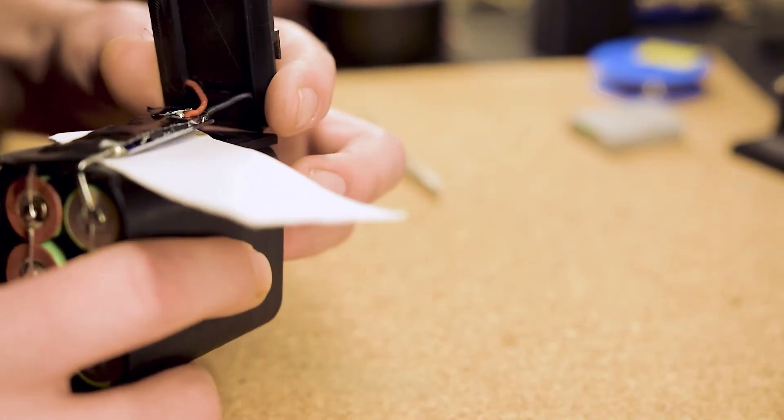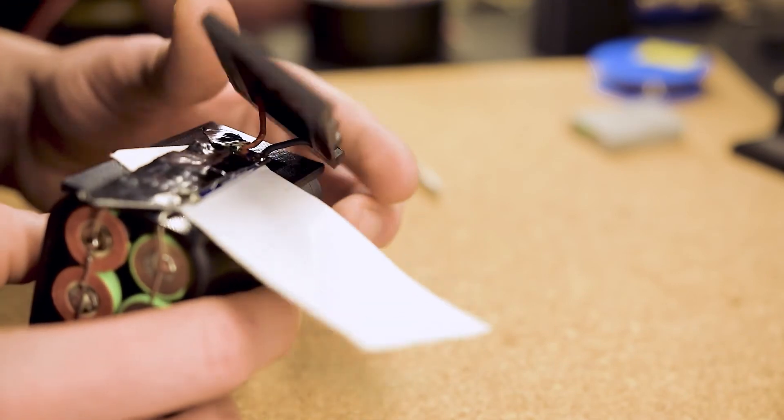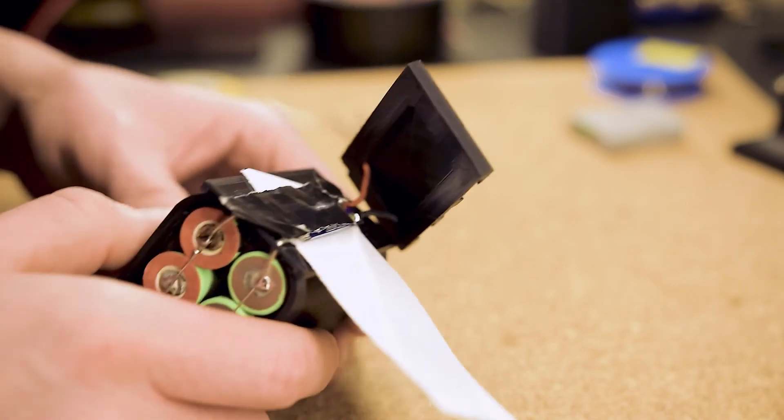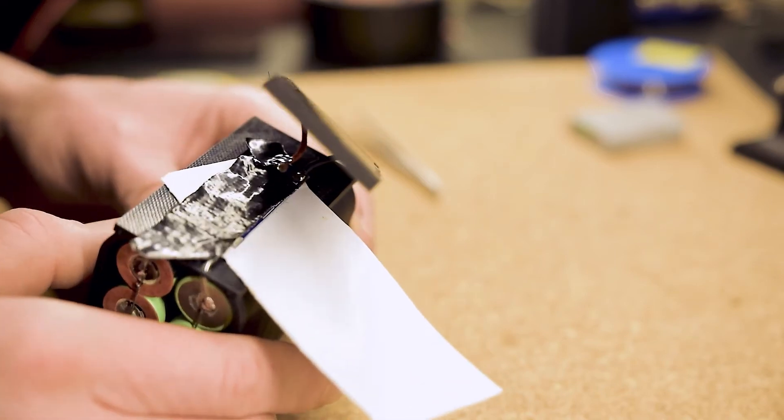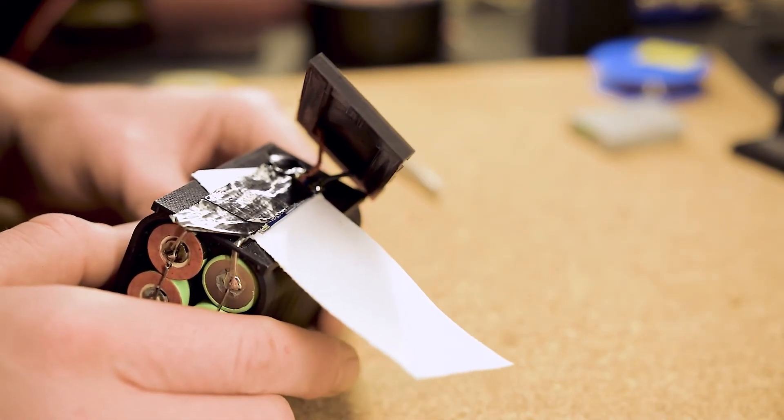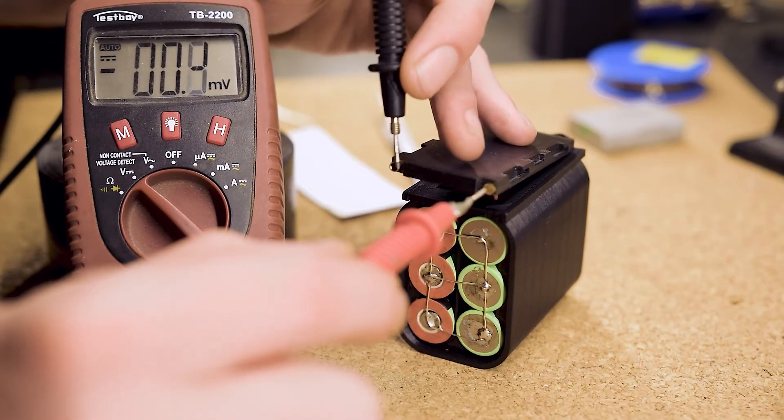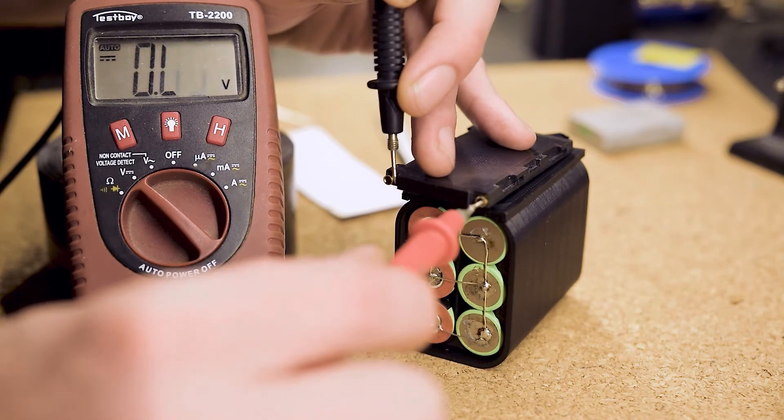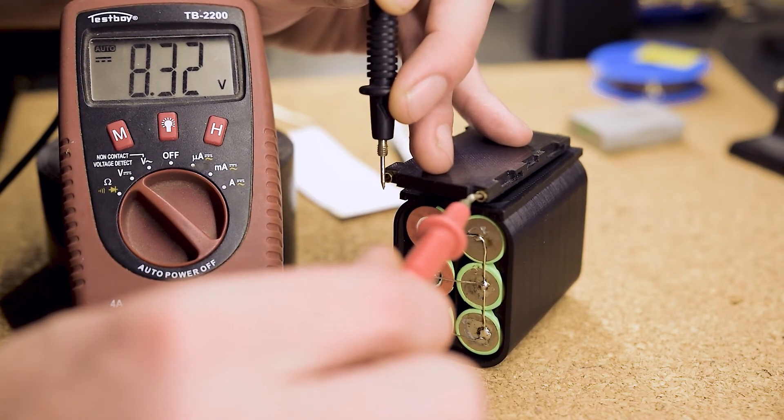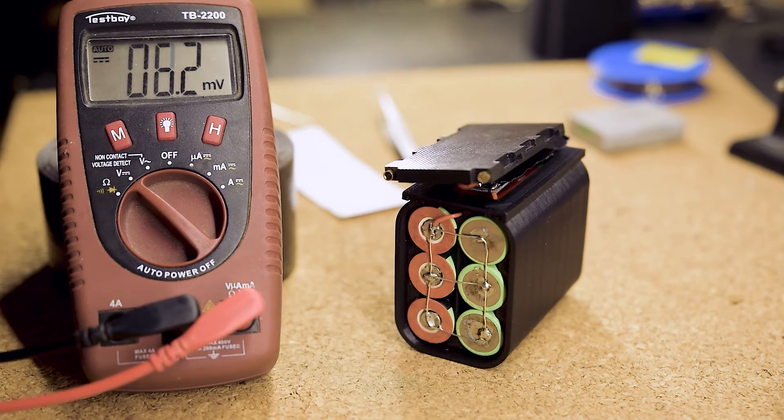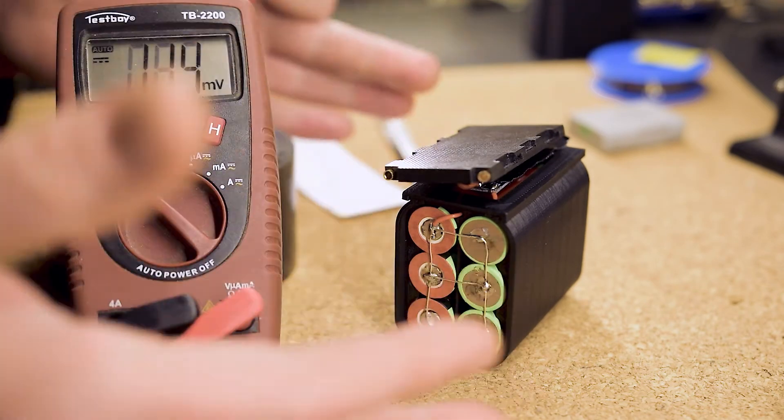Now, that everything is soldered, we can activate the BMS. The datasheet says this is done by connecting the battery to a power source with 8.4 up to 9 volts. I just used my charger. Afterwards, we can check the voltage of the package. So far so good. This looks right. Now we know that everything works.